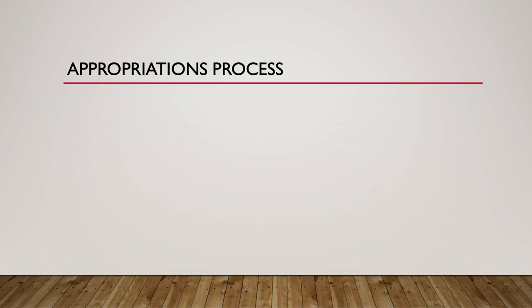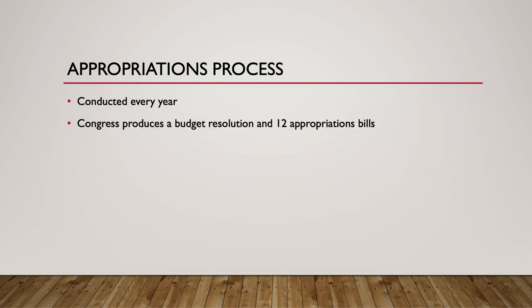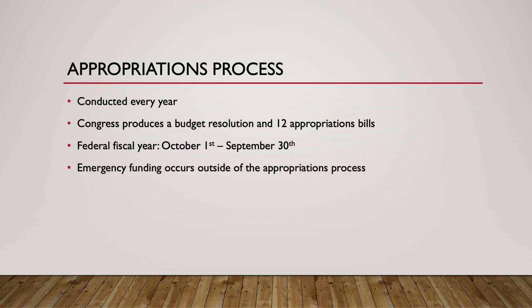To better understand discretionary spending, it's important to be familiar with the appropriations process. The appropriations process is conducted each year. Congress is required to produce a budget resolution and 12 appropriations bills. The federal fiscal year begins on October 1st and concludes on September 30th. Emergency funding in response to natural disasters, pandemics, or other catastrophes occurs rather frequently and outside of the appropriations process.